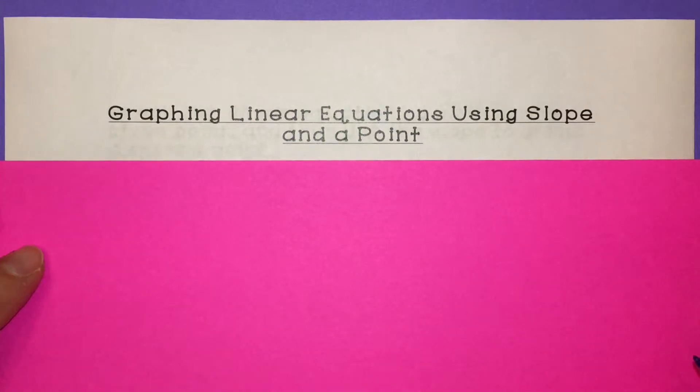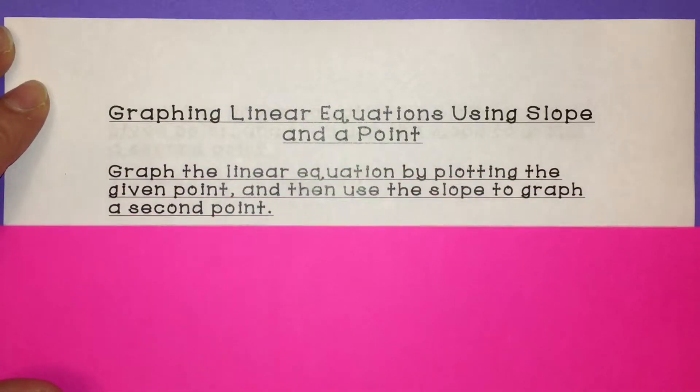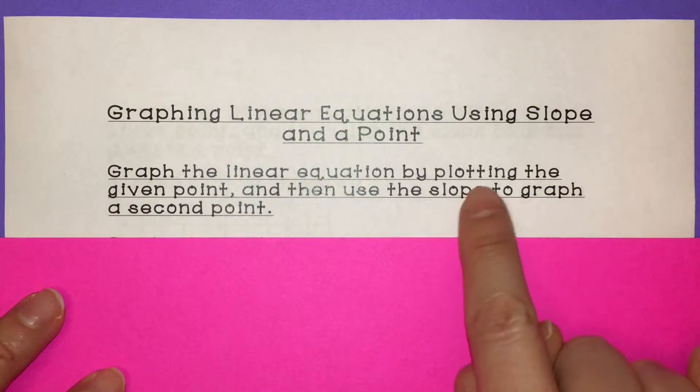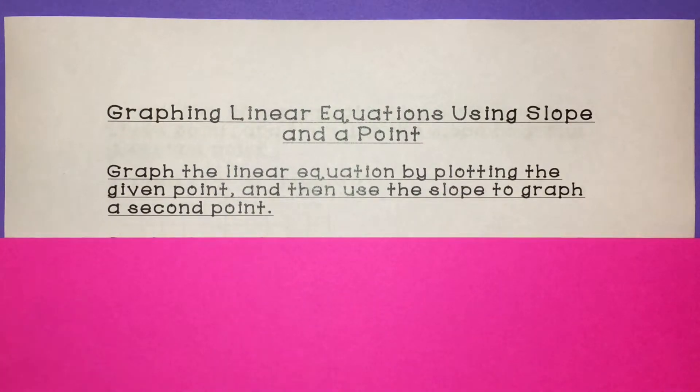We're going to graph linear equations using slope and a point. First thing you need to know is anytime you see that word linear, you know it's going to be a straight line. It's not going to have any curves or bends in it. It's just going to keep going in a straight line forever in both directions. We're going to graph a linear equation by plotting the point that we're given on a coordinate grid, and then we're going to use a slope to graph a second point. So we're going to use a slope in rise over run form to graph that second point.